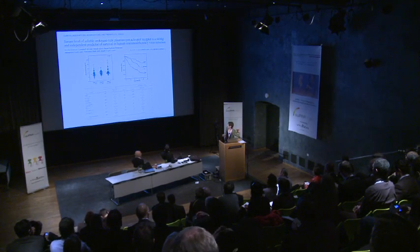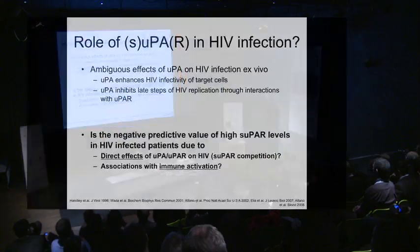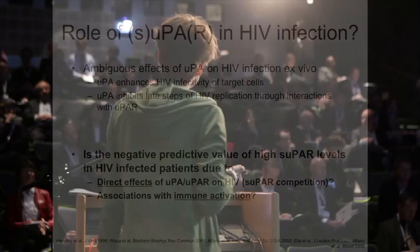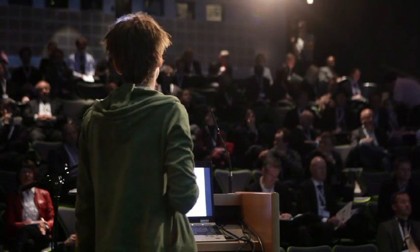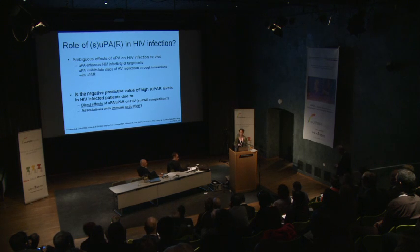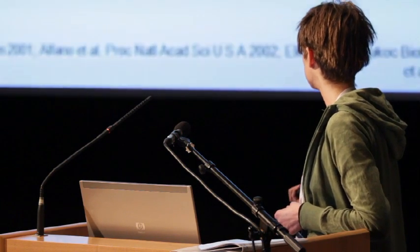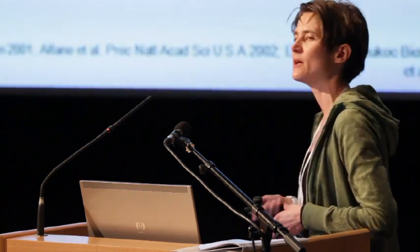This paper showed that SUPAD increased with HIV disease progression and that it predicted mortality as good as CD4 count, which made us ask a few questions. At that time, it was published that UPA and the ligand of UPA had ambiguous effects on HIV infection ex vivo — one study described that UPA enhanced HIV infectivity of target cells, whereas other studies demonstrated that UPA inhibited late steps of HIV replication through interactions with UPA. So it was a big question whether the negative predictive value of high SUPAD levels in HIV-infected patients was due to direct effects of UPA on HIV, or whether it merely reflected immune activation.